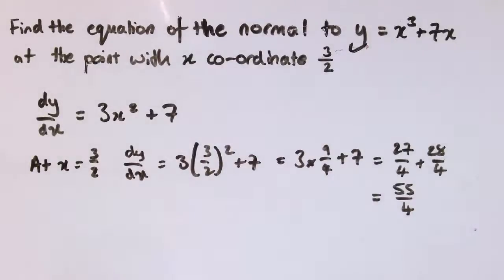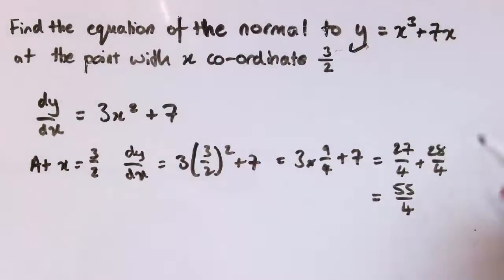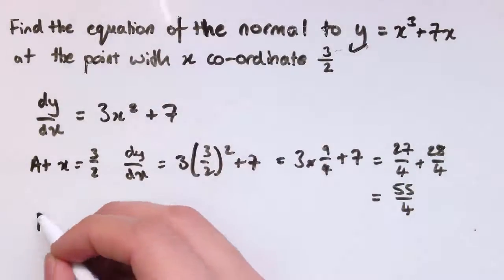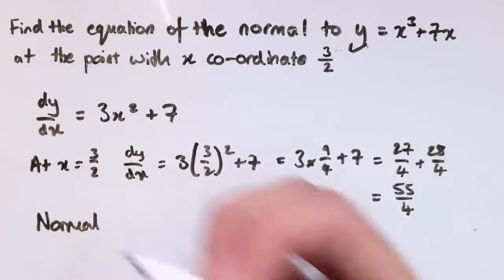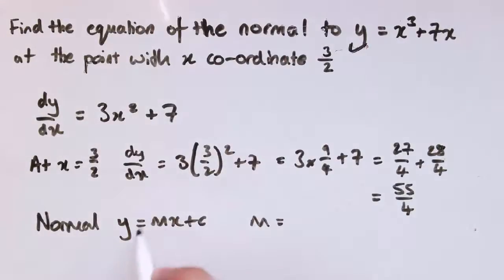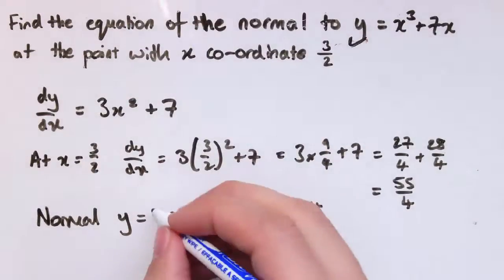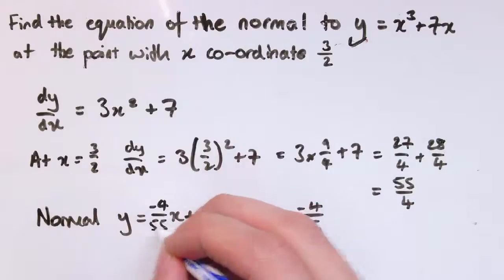So that would be the gradient of the tangent at that point. Hope you're okay with this without the graph being drawn. Of course, usually we don't draw out the graph every time, but we're thinking through the steps. So the gradient of the normal is going to be a line y equals mx plus c, and the m is the negative reciprocal of this, which is minus 4 over 55.